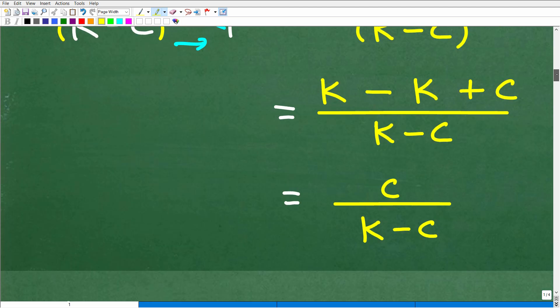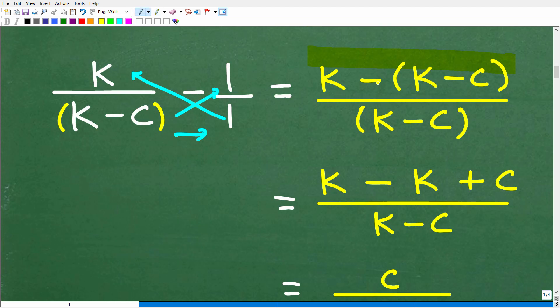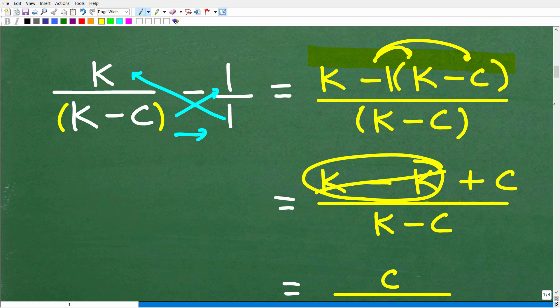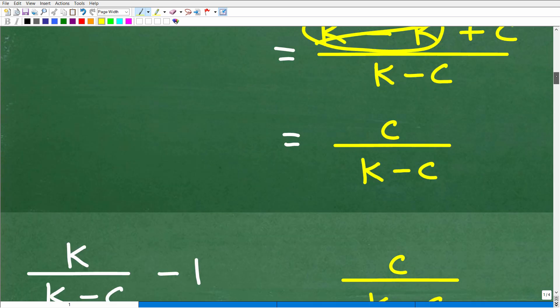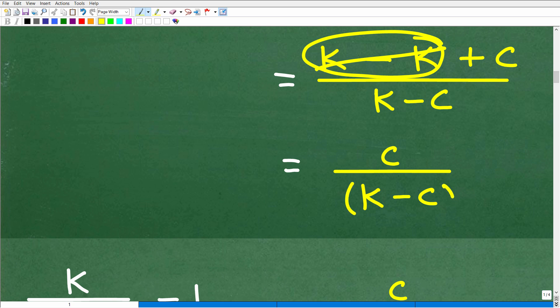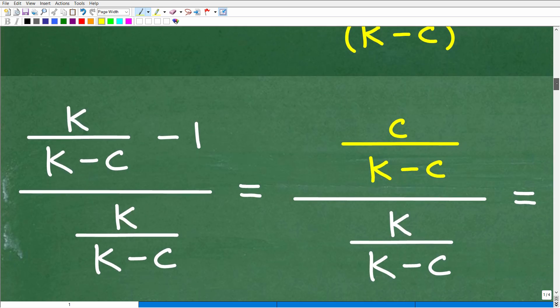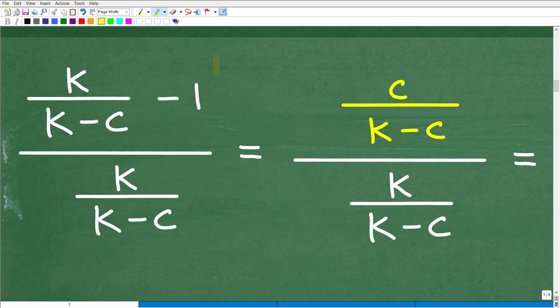What we need to do now is clean up this numerator. All right, so how do we do that? Well, what we have to do is distribute this negative sign into each. Remember, this is negative. You're like, well, I don't see a number. Well, there's a 1 there, okay, negative 1. So negative 1 times k is going to be negative 1k or negative k. And then negative 1 times a negative c is a positive c. So you can see here our k's go away. k minus k is 0. So we're left with c over k minus c. All right, so that is what the numerator simplified to.